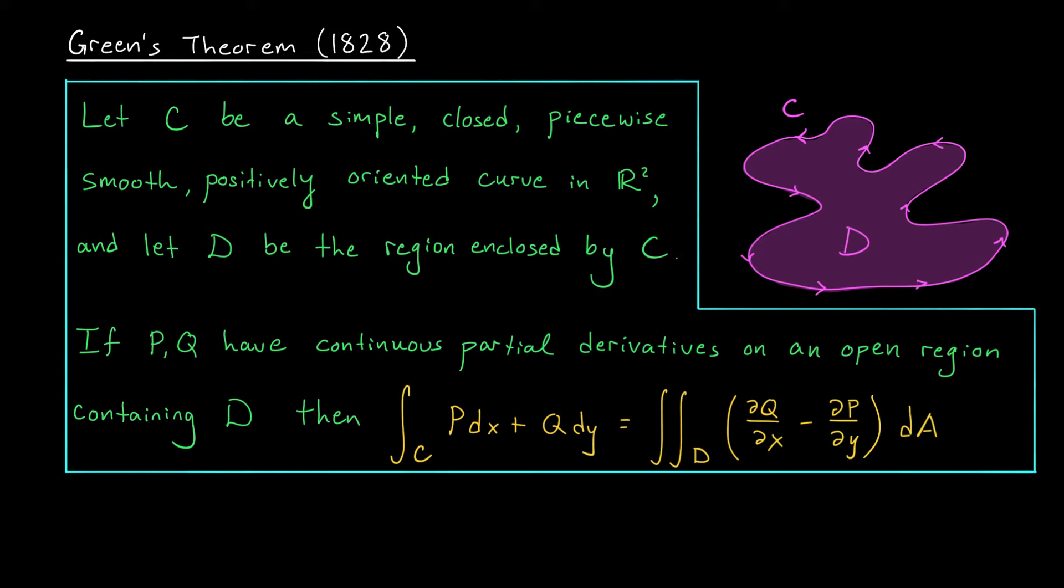What do all these words mean? Well, we know simple and closed. Simple means it doesn't cross itself, and closed means it starts and ends at the same points. Piecewise smooth just means that the curve is nice and smooth, nice and differentiable, or it's made up of several such curves that are glued together. This is not really a big deal.